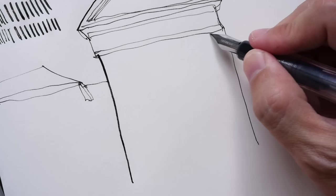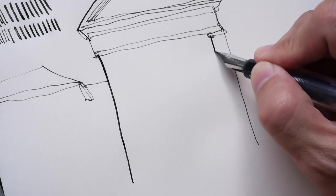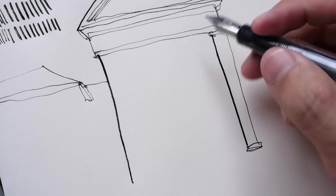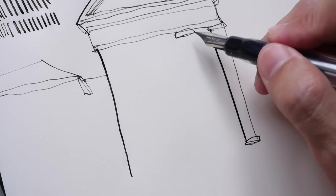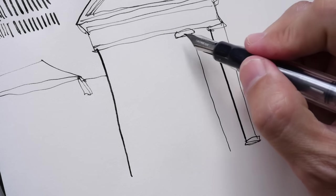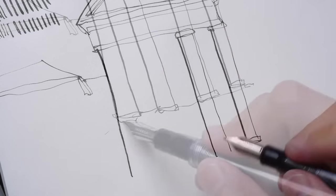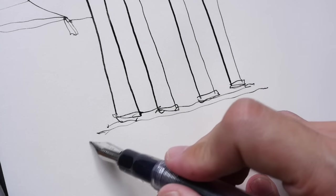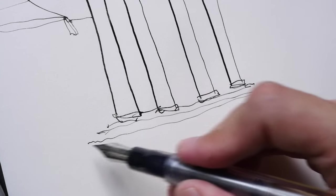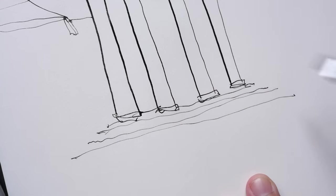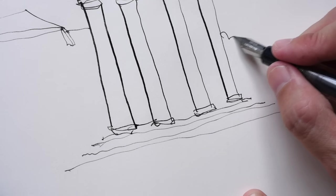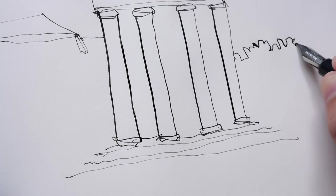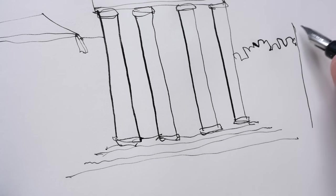But not so with this steel nib pen. So here I will press down harder for the thicker lines. Thin line here and a thick line here. So there are some stairs here. I will just use the thin lines. Some trees at the back - perhaps I want to use a bit of thin and a bit of thick line.